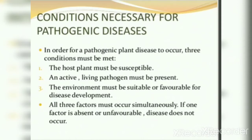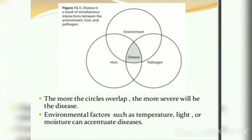If the pathogen is not active or not living, it will not cause damage. There is a continuous interaction between the environment, host, and pathogen. When all three factors are favorable, disease develops. The more the circles of environment, host, and pathogen overlap, the more severe the disease will be.